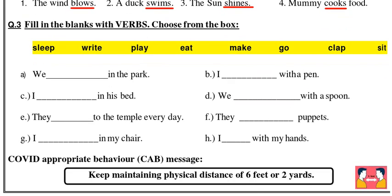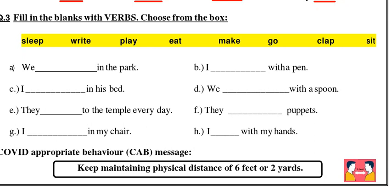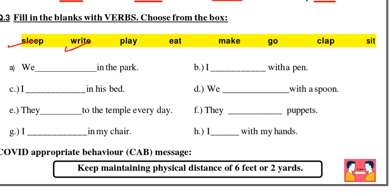Question 3: fill in the blanks with verbs — choose from the box. The verbs are: sleep, write, play, eat, make, go, clap, and sit. That is a total of eight words, and we have to use them in these sentences. First is 'We dash in the park' — what do we do? Yes, we play in the park, so we take 'play' from the box.